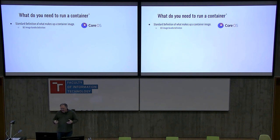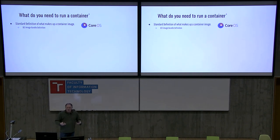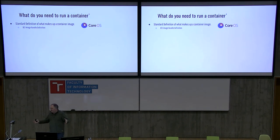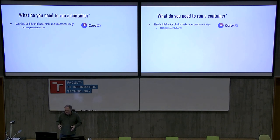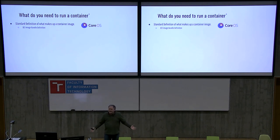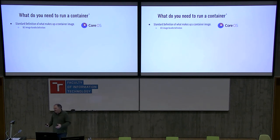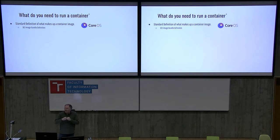They opened up a request for everybody to review the APC spec — Application Container Specification. At which point, all the people working on containers got together and said we can't have two standards — we can't have RPM and Debian again. They came together and formed the OCI, Open Container Initiative, a standard definition of what makes a container. About a year ago, the OCI image bundle specification came out, defining what goes in the JSON file and what goes in the tarball file.